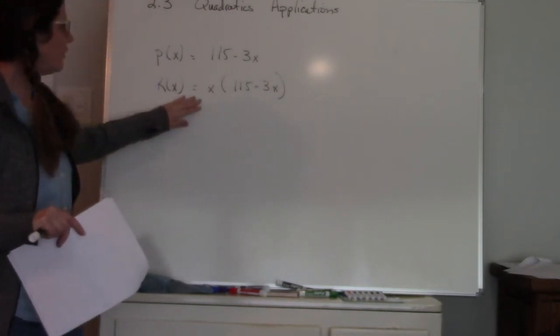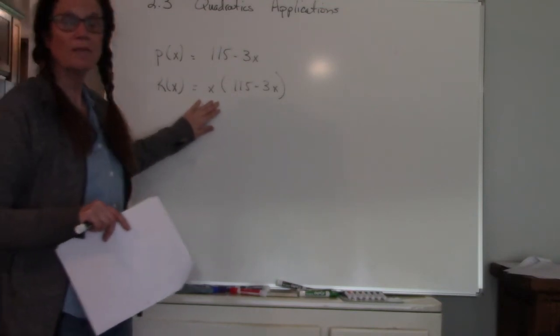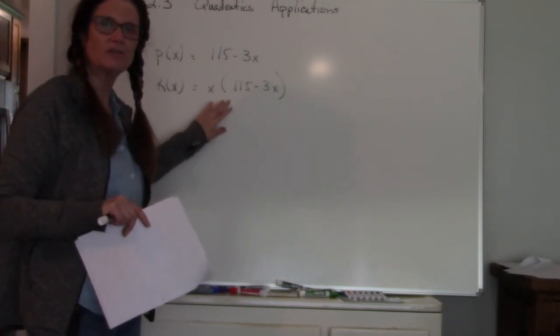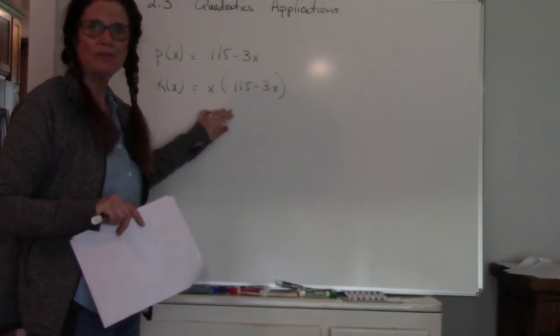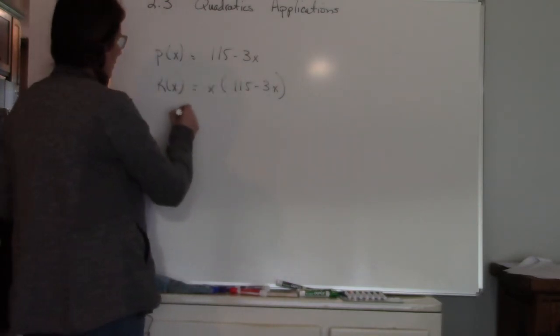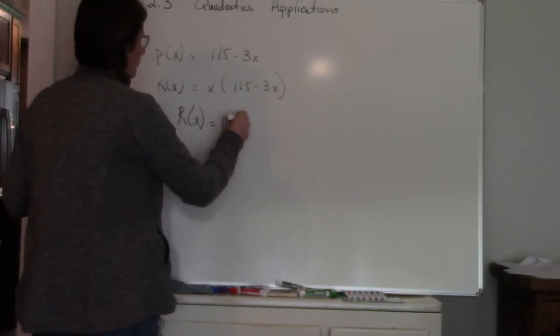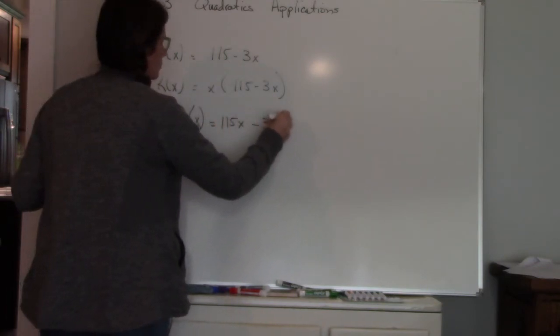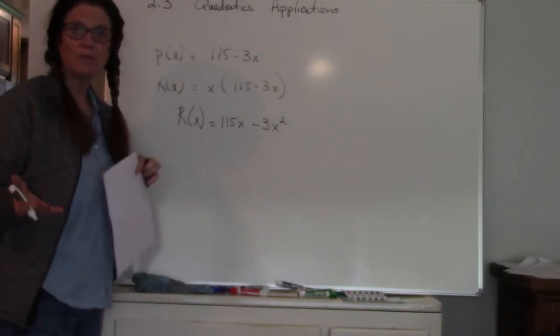So with this one if I want you to find the maximum revenue what I'm looking for is the vertex of my revenue function. So when I multiply this out my revenue function ends up being 115X minus 3X squared. That's my revenue function.